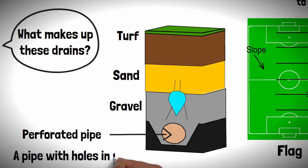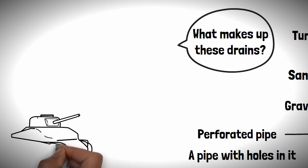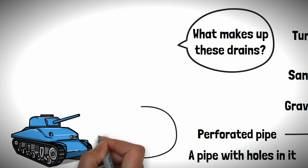Essentially, a pipe with holes in it to allow the water to get into it. The pipe will then move the water away from the pitch and drop it off somewhere more appropriate, such as a storage tank, before saying adios.